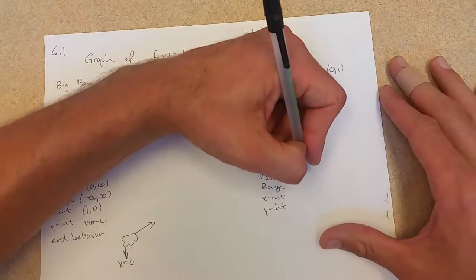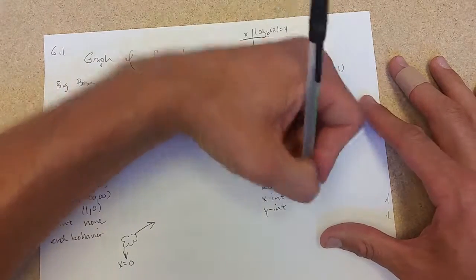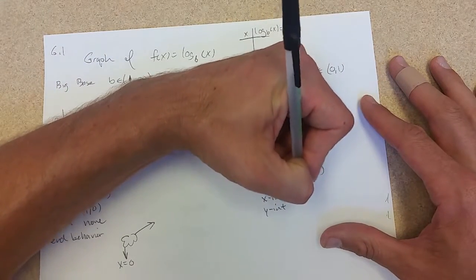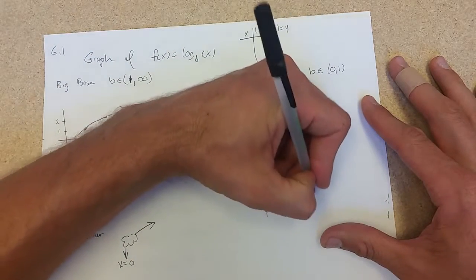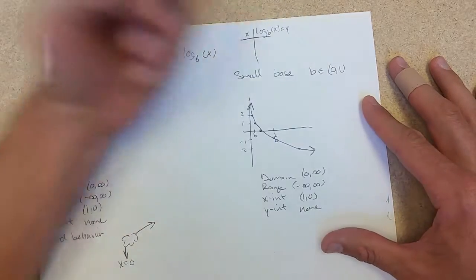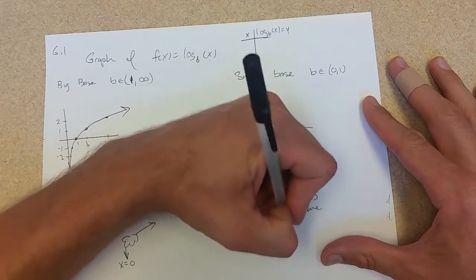Domain, same thing, zero to infinity for a little base. Range, negative infinity to positive infinity, full range. X-intercept one, zero. No y-intercept, and behavior.